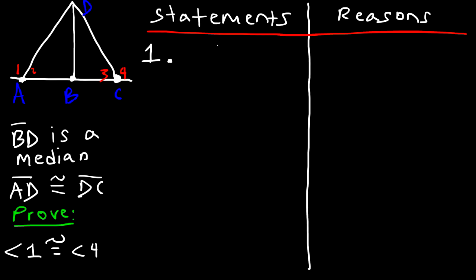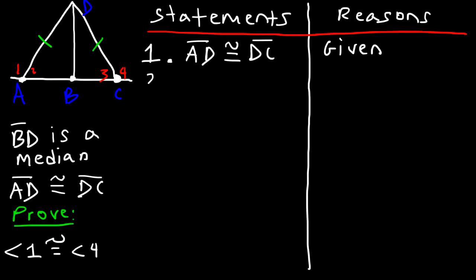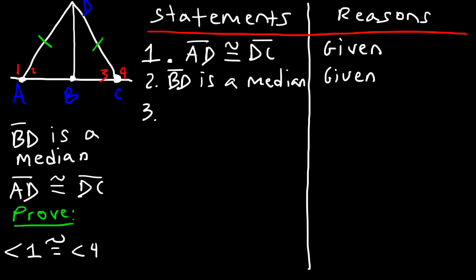Let's start with the fact that AD is congruent to DC — that's given. Let's mark it on the graph: AD and DC are the same. Now we know that BD is a median, and that's given as well. If BD is a median, and a median is a line segment that connects vertex D to midpoint B, that means B is a midpoint.